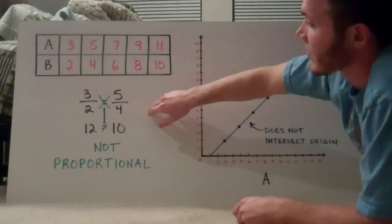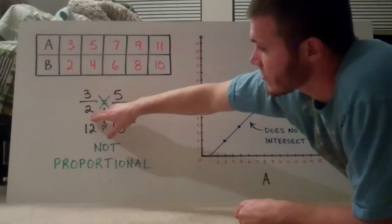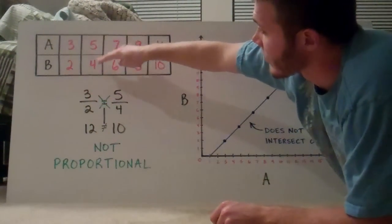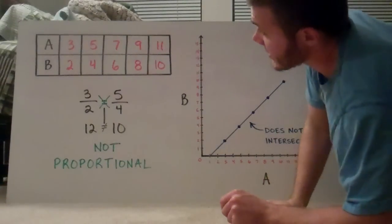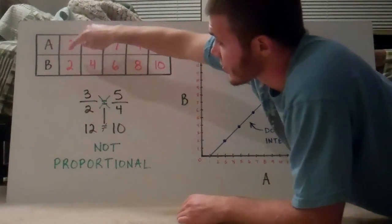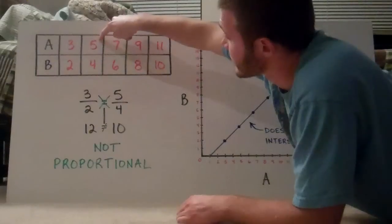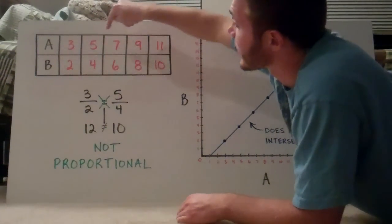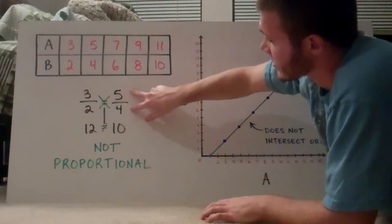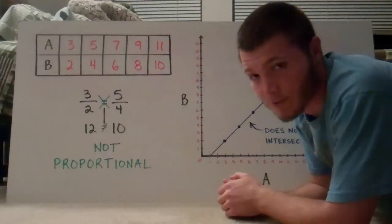So I took 3 over 2, a is 3, b is 2, and I took 5 over 4. Because these right here, class, are ratios. When a is 3, b is 2. When a is 5, b is 4. When a is 7, b is 6. So I just took 2 ratios, I set them equal to each other, and I cross multiplied.